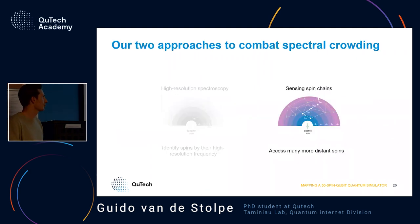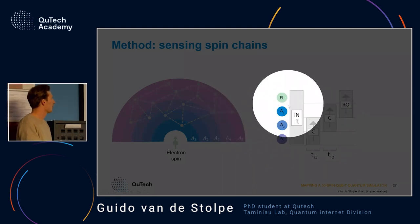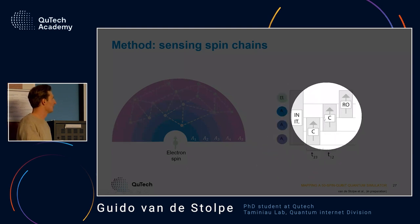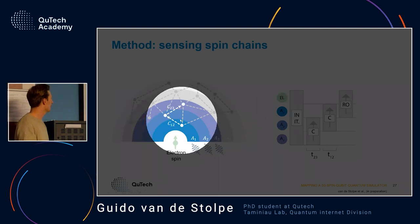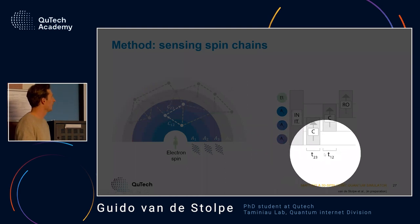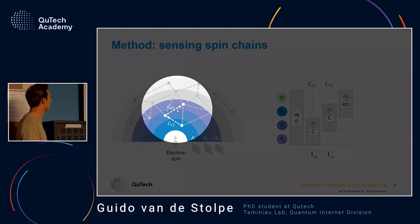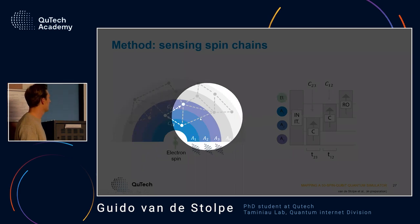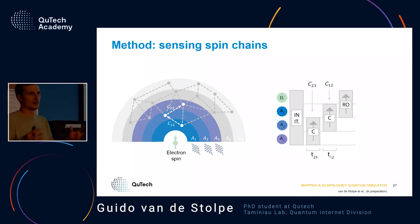For the other problem — getting further out in the network — we want to make spin chains. What we do is take two SEDOR blocks and put them together in one experiment with three RF frequencies. This lets us measure in one go the whole chain from spin one to spin two to spin three. We sweep the frequencies and get the couplings C12 and C23. This way we can access a spin at A3 via this chain, and even if there are multiple spins around A3, only the spin connected to this chain is accessed.